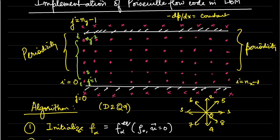The calculation will use the D2Q9 selection of velocities. There are nine velocities: zero being the zero velocity, with the remaining directions numbered as shown. So we have nine total velocities in the set.